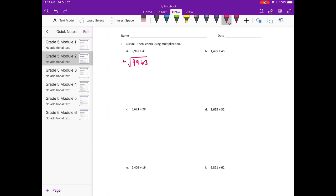9962 divided by 41. 41 can't go into 9 so I'll put my 0 above the 9. 41 could go into 99 twice. 2 times 41 is 82.